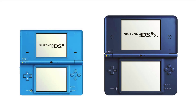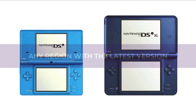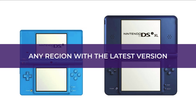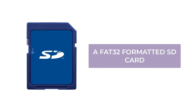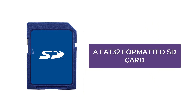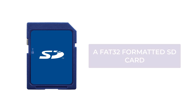You will need a Nintendo DSi or a DSi XL from any region with any firmware version, but it is better to update the console to the latest version before following this guide. You also need a FAT32 formatted SD card to backup the console's NAND and to store games and apps.